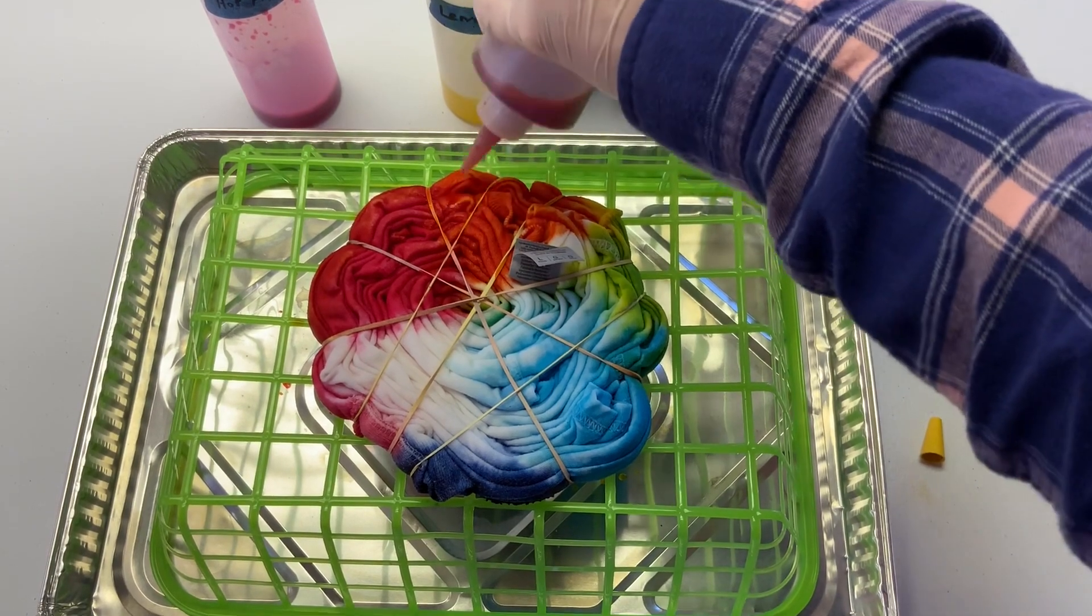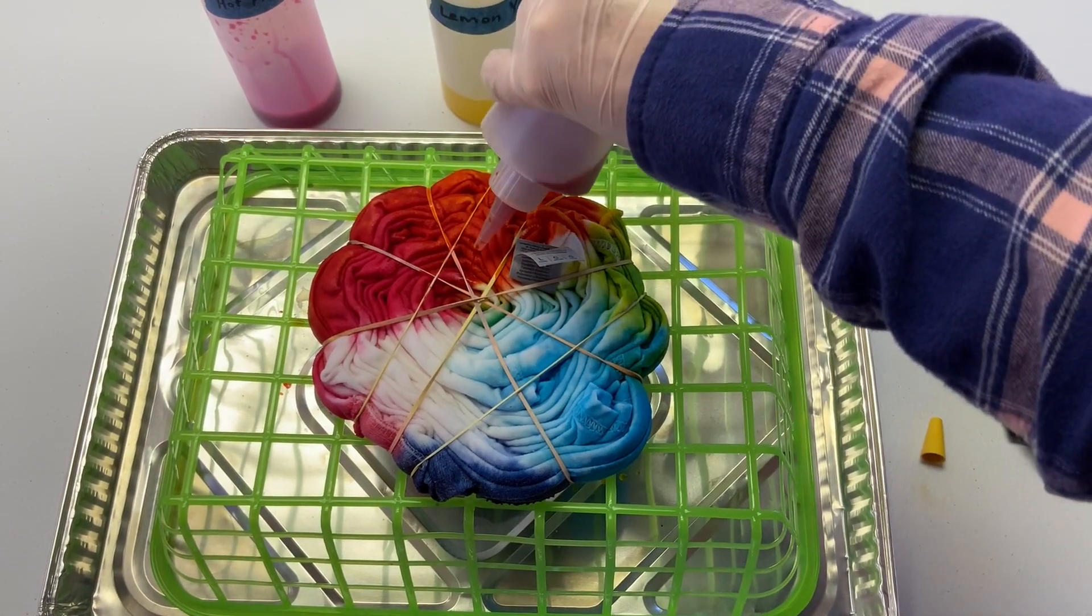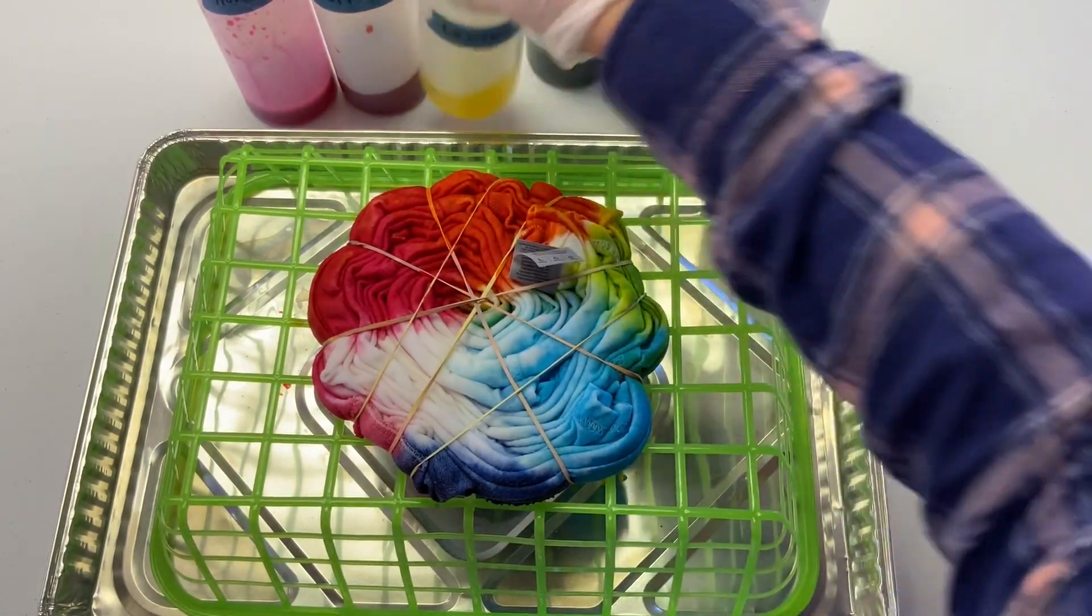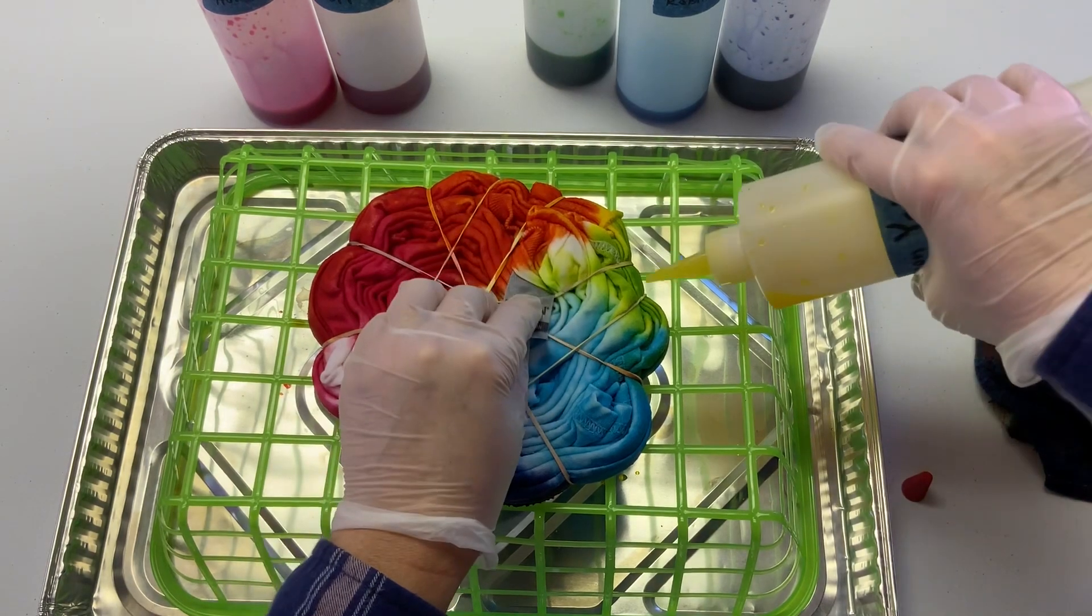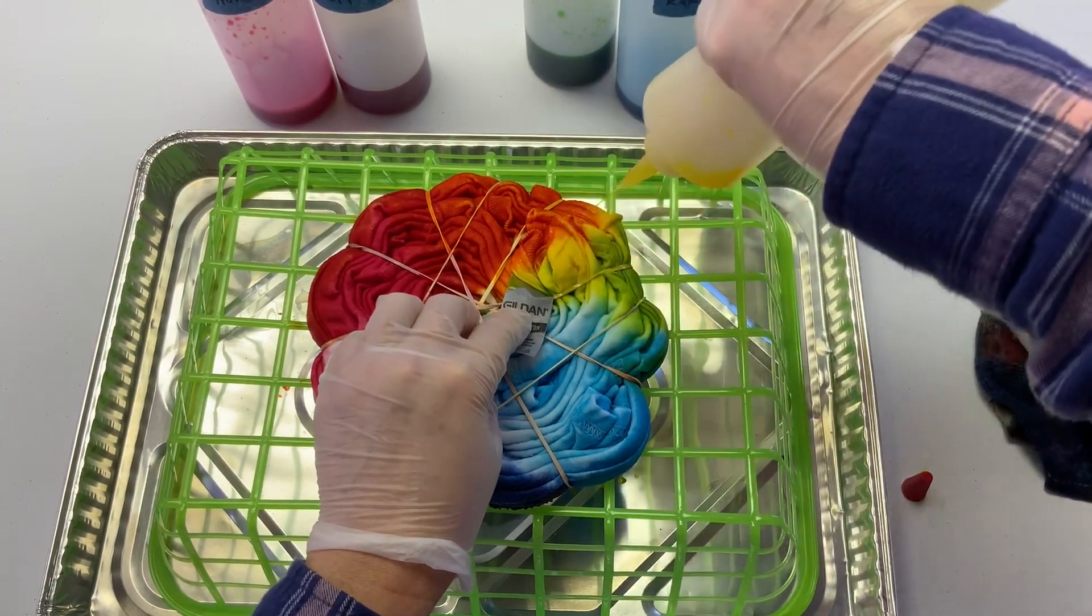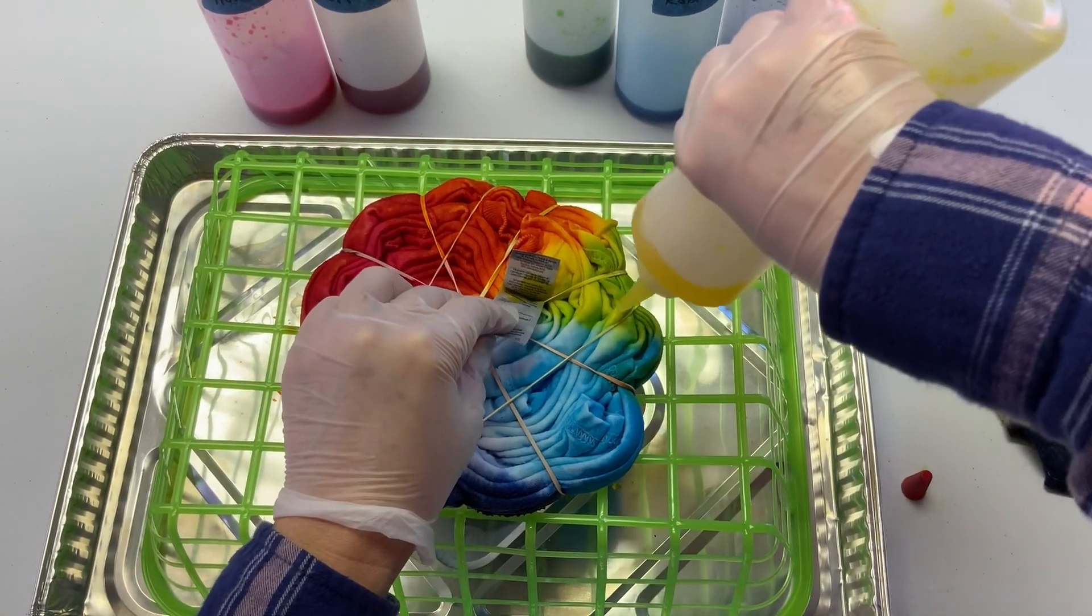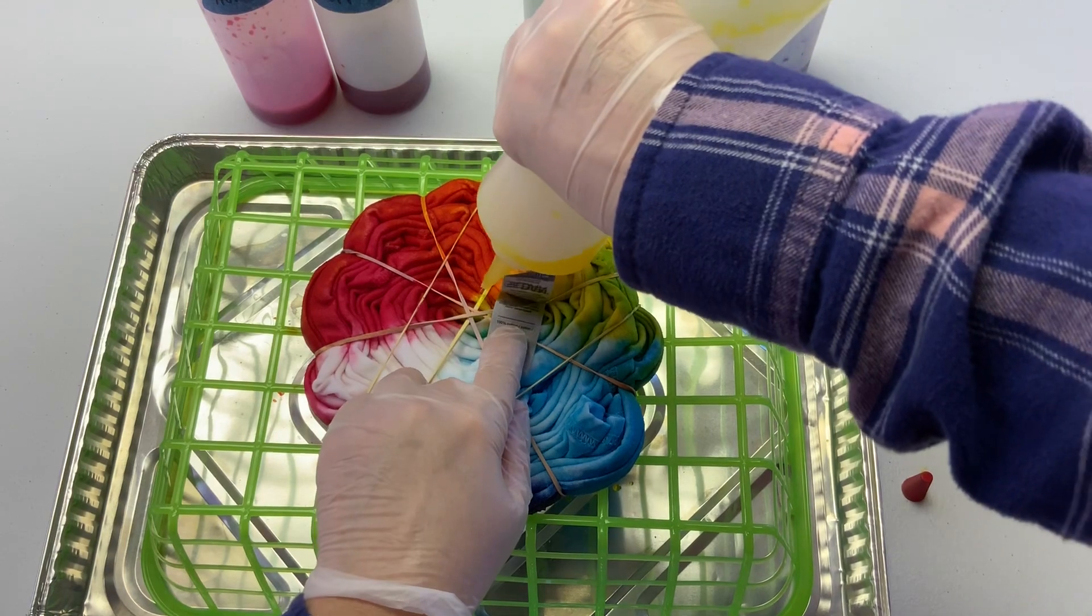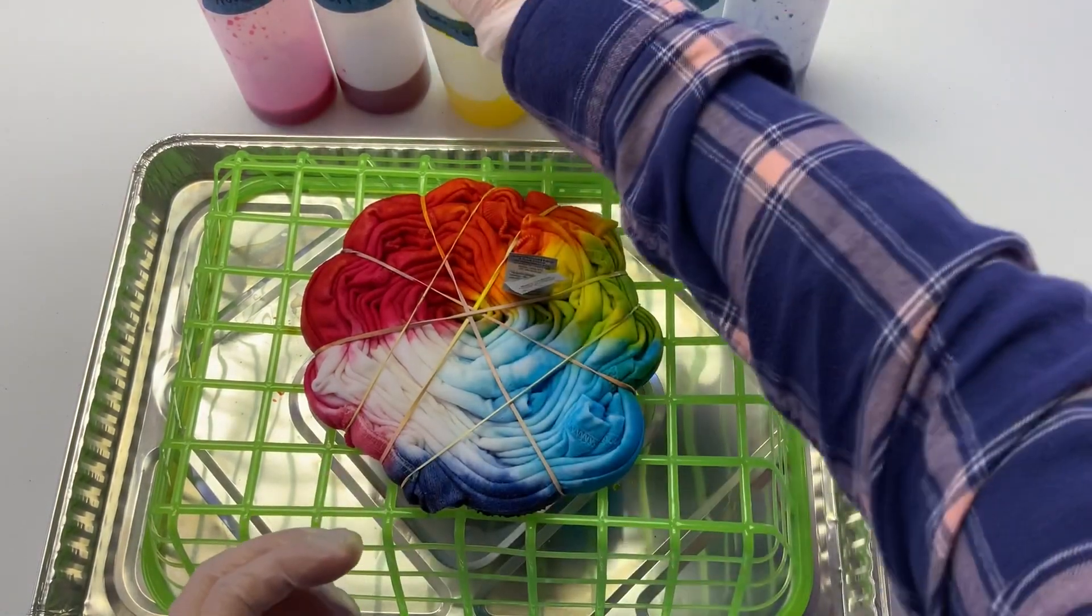So next to follow in the rainbow pattern of these pastels, I'm going to put the yellow down. And remember, I'm trying to offset it so that they sort of mix on the other side, giving it a different effect. I have no idea how this is going to turn out, so we're along for the ride together. Next I'm using the lime pop.